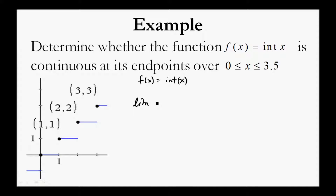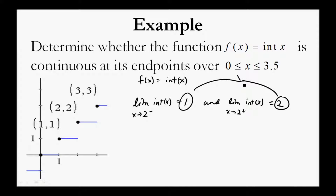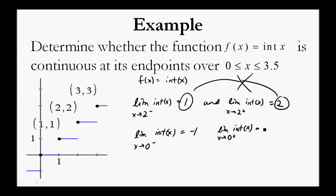For example, the limit of int(x) as x approaches 2 from the left equals 1, and the limit of int(x) as x approaches 2 from the right equals 2. These two values are not equal, so the overall limit does not exist. When looking at the endpoint x equals 0, we determine that the limit of int(x) as x approaches 0 from the left equals negative 1, and the limit of int(x) as x approaches 0 from the right equals 0. Therefore, the limit of int(x) as x approaches 0 does not exist.